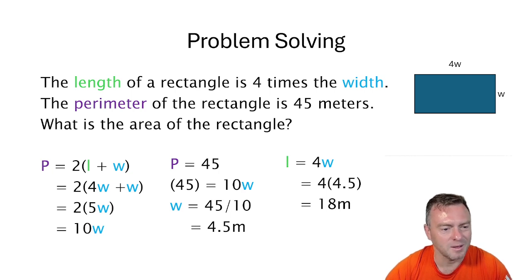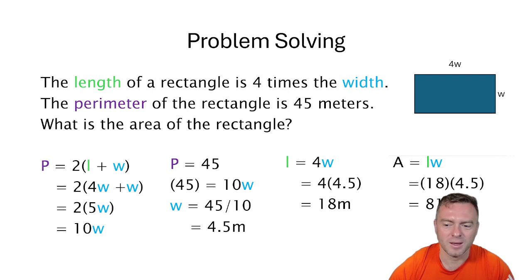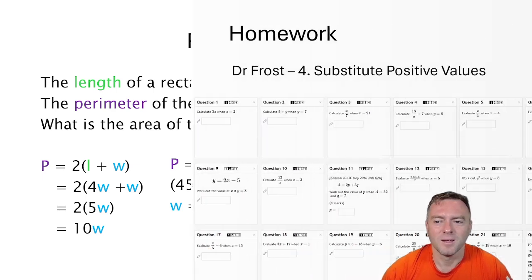And then the last bit here because the question was asking what was the area of the rectangle. We need to times those two together. So 18 times 4.5. And then we get 81 meters squared. So notice that I put the units in all the way through this. That's really really important. Cool.